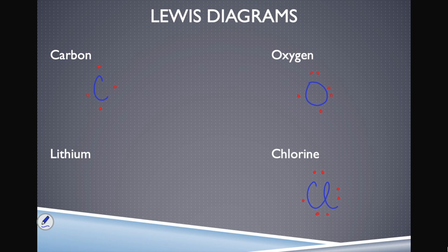Lithium: group one, just one valence electron. Place it on whichever side. So there you have it — Bohr diagrams show all electrons assigned to energy levels filling from the inside out, with each level having a maximum capacity. Lewis diagrams show only valence electrons as dots combined with the atomic symbol.